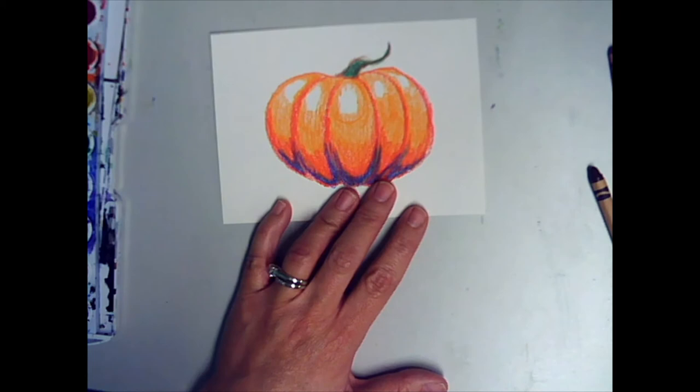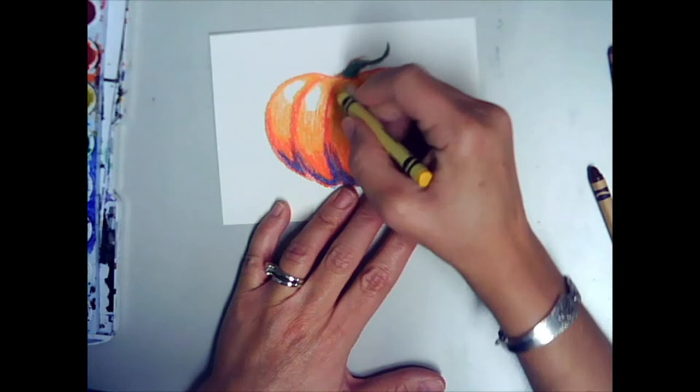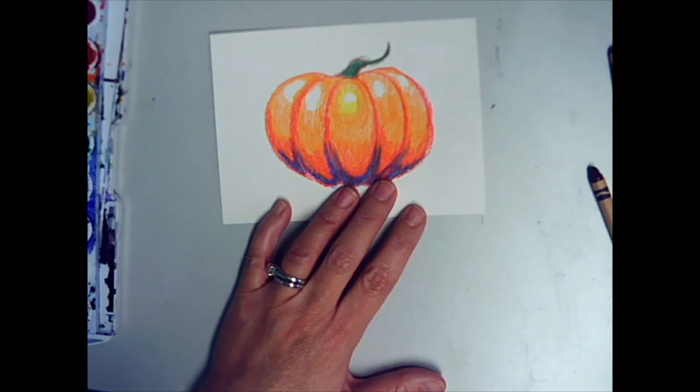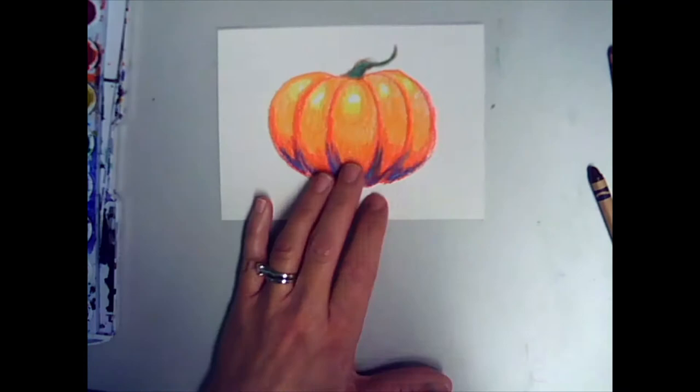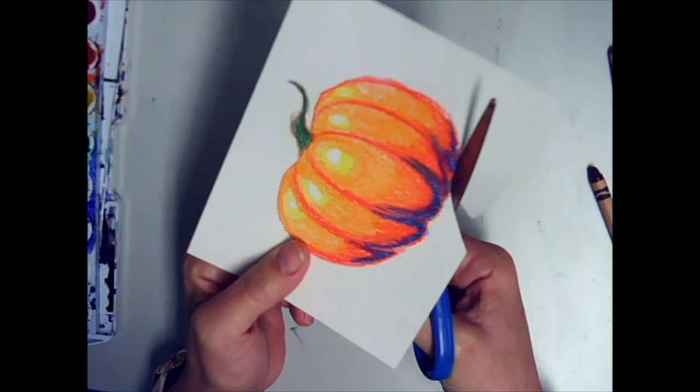All right, I'm going to finish up my pumpkin with a little bit of yellow. I chose the dandelion yellow, I think it shows up a little bit better. I'm coloring into the edge of my orange, and I'm going to leave a little white highlight on each section, so I have a little white spot right there. And now, I need to cut my pumpkin out, so I'm going to try to cut right along the edge of the crayon.